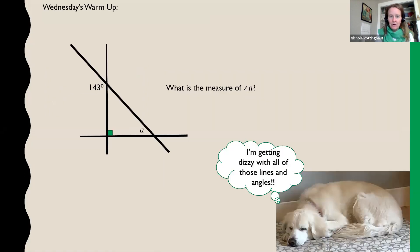Okay, you have a warm-up. This is a tricky problem. I want you to think about it. I'm going to give you a little hint. The hint is: remember what we talked about last week about triangles. If you add up all of the angles in a triangle, they equal 180 degrees. You need that information to be able to solve this problem. So pause the video, see if you can figure out the measure of angle A, and then come on back and I'll show you the answer.